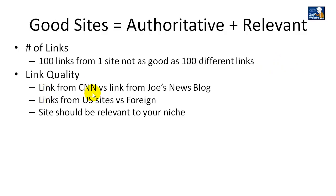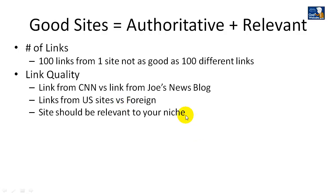Link quality matters. A link from CNN versus a link from Joe's News Blog — CNN has a PageRank of 9, and the maximum PageRank you can have is 10. Joe's News Blog may have a PR of 0 or 1. A link from CNN is going to be worth a lot. If you're a US-based website, links from US sites are going to be worth a lot more in terms of your authority than links from foreign websites. Getting too many links from foreign websites, particularly if they're not relevant, can cause Google to penalize your website. So when you're thinking about buying backlinks — like you see on Fiverr.com — I wouldn't advise it, because a lot of those backlinks are going to be foreign and not relevant to your website, and it's actually going to hurt your website more than help.